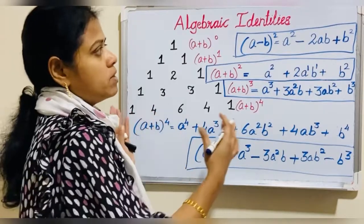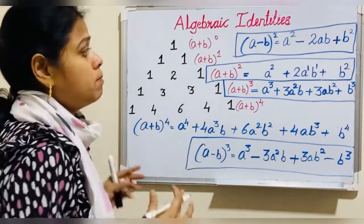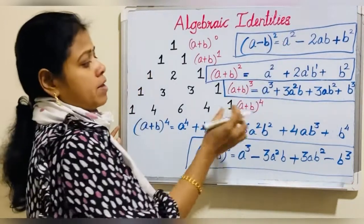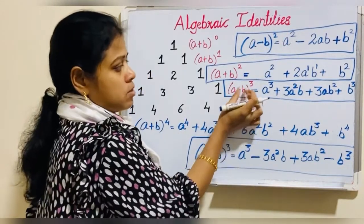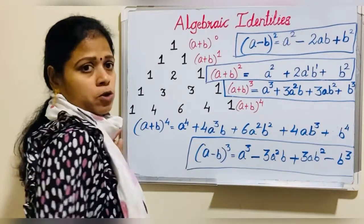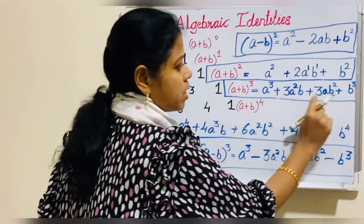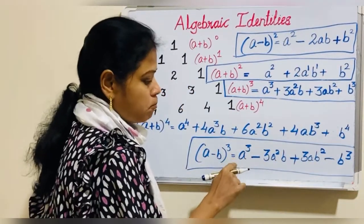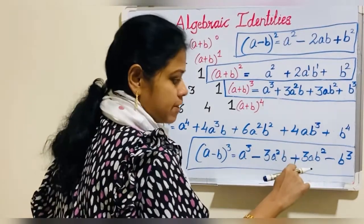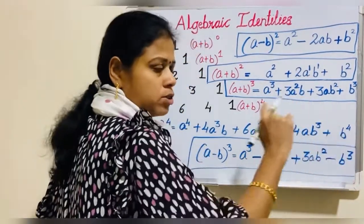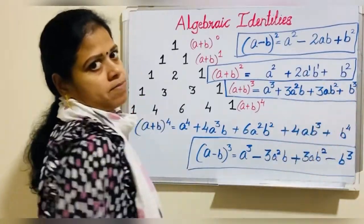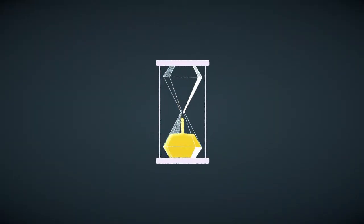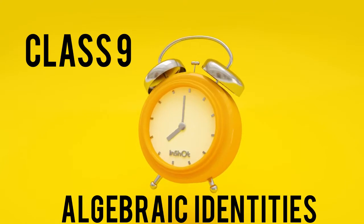This is an easy trick to remember the algebraic identities — (a+b)², (a−b)², (a+b)³, and (a−b)³. If it is plus, all the signs will be plus. If it is negative, the first term is positive, the second term is negative, then positive, then negative — positive and negative alternate. Now let's see all the identities involved in the chapter of polynomials.